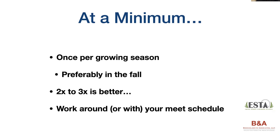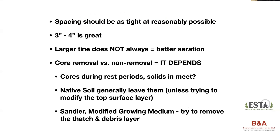At a minimum, you should be aerating once a growing season — bare bones minimum. If you're going to do it once a year on cool season grass, preferably do that in the fall. If you're on a bermudagrass surface, do it more toward the beginning to middle of summer months. Two to three times a year at a minimum is better. Work around your meet schedule to give yourself the best opportunity for success. Your spacing should be as tight as reasonably possible — three to four inches is pretty typical and a really nice spacing for most applications.